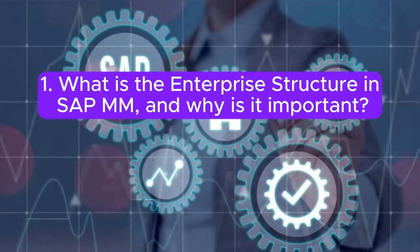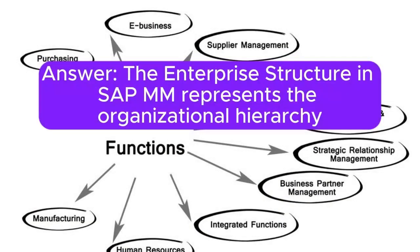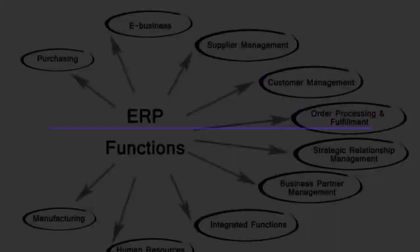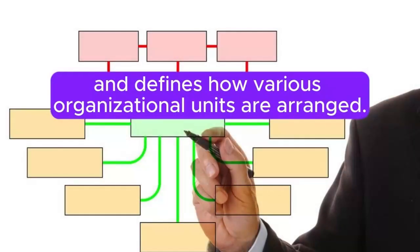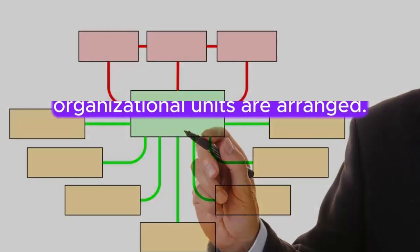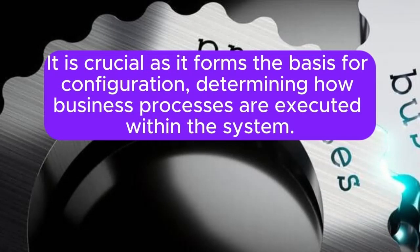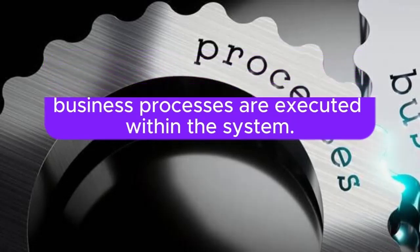Question 1: What is the Enterprise Structure in SAP MM, and why is it important? The Enterprise Structure in SAP MM represents the organizational hierarchy and defines how various organizational units are arranged. It is crucial as it forms the basis for configuration, determining how business processes are executed within the system.